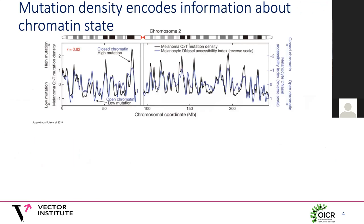Rather than focus on driver mutations, we've recognized that the problem of identifying cancer type is really a problem of identifying cell type. A defining feature of cell type is its chromatin state. In fact, we can actually use the mutations in a tumor to encode the information about chromatin state.